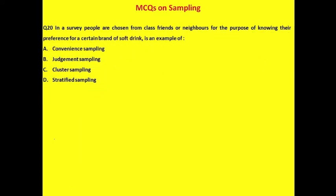Question 20: In a survey, people are chosen from class friends or neighbors to find their preference for a brand of soft drink. This is an example of convenience sampling, because the researcher takes participants who are readily accessible and available. The correct answer is convenience sampling.